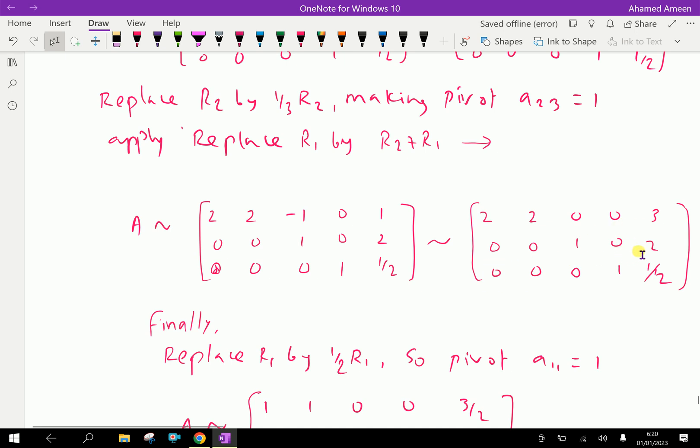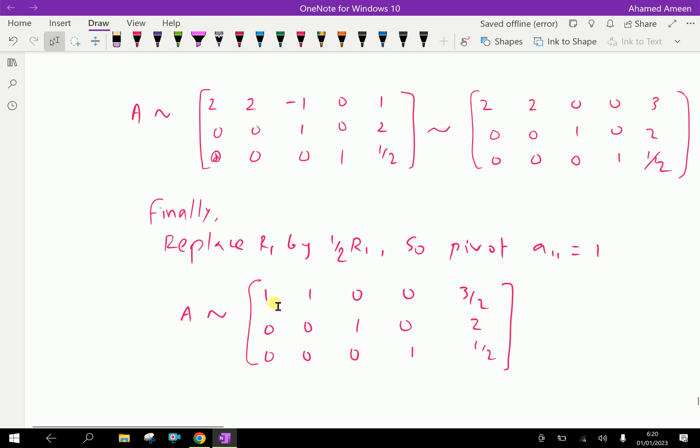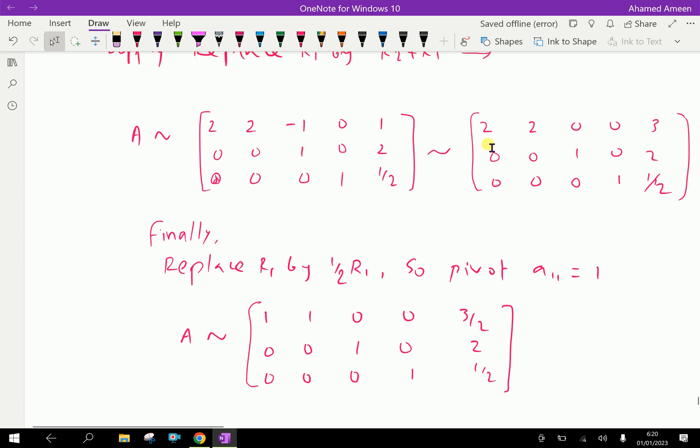Finally, we can get row canonical form by using replace R1 by half R1, so the pivot a11 is 1. That means multiply the first row by half. We get 1, 1, 0, 0, 3 by 2, then 0, 0, 1, 0, 2, and 0, 0, 0, 1, half.